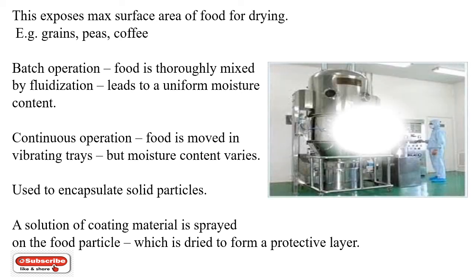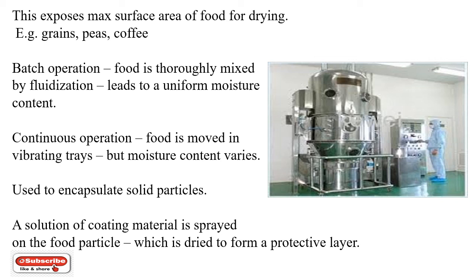There are two methods of operation. In batch operation, food is thoroughly mixed by fluidization, leading to a uniform moisture content. In continuous operation, food is moved on vibrating trays but moisture content varies. Fluidized bed dryers are also used to encapsulate solid particles — a solution of coating material is sprayed on the food particles, which dries to form a protective layer.